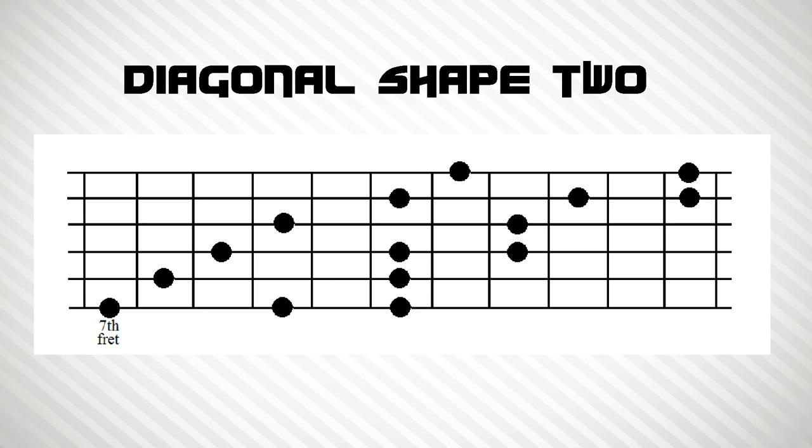This second diagonal shape starts on fret number seven, and it cuts diagonally across right up to fret number seventeen.